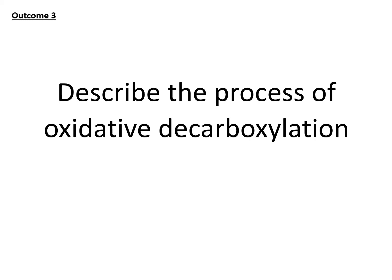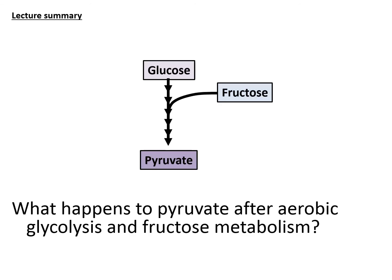In the third learning outcome, we will describe the process of oxidative decarboxylation. When you convert glucose into pyruvate, that reaction is glycolysis. Eventually, all six-carbon glucose molecules or other sugars will have to go through some alternate pathway before they can enter the glycolytic pathway, producing the three-carbon pyruvate molecules.